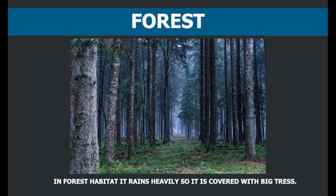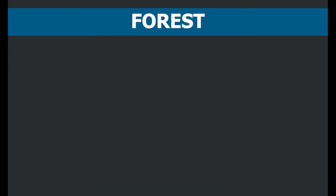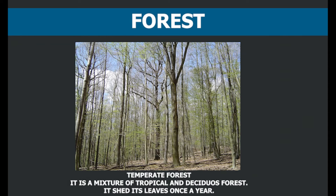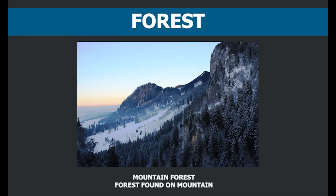In forest habitat it rains very heavily and thus forests are covered with big trees and a lot of vegetation. There are three types of forests: tropical forests, temperate forests, and mountain forests. Tropical forest remains green throughout the year. Temperate forest is a mixture of tropical and deciduous forest. In deciduous forest, leaf fall takes place once a year. Forests which are found on mountains are called mountain forests.